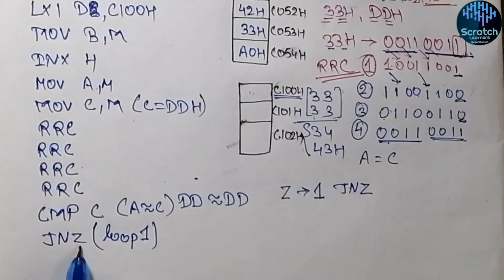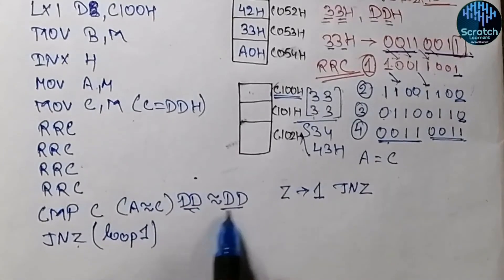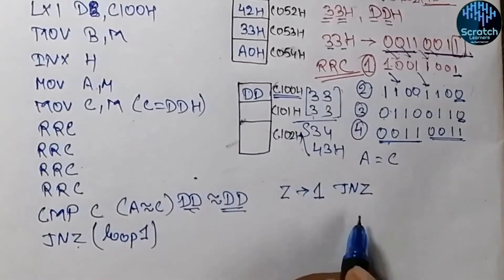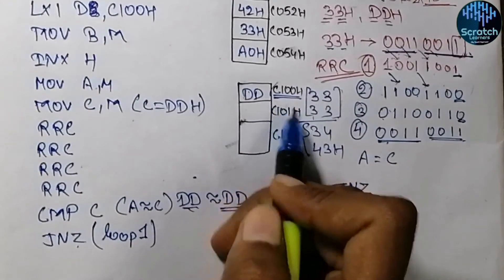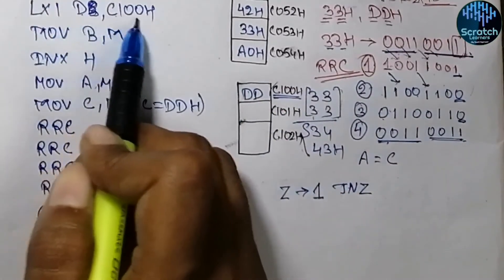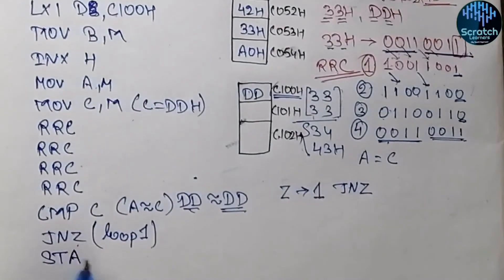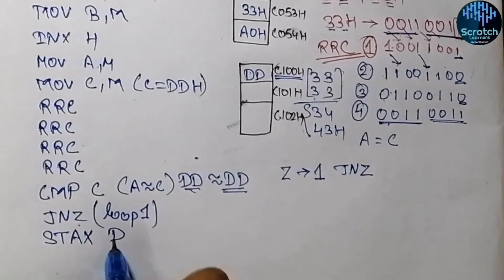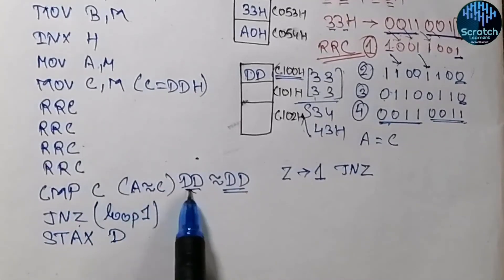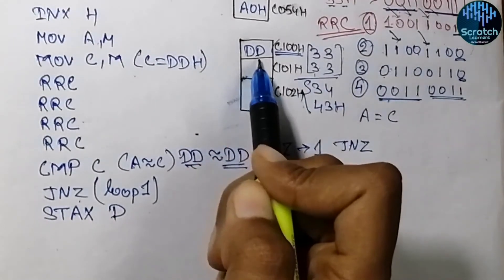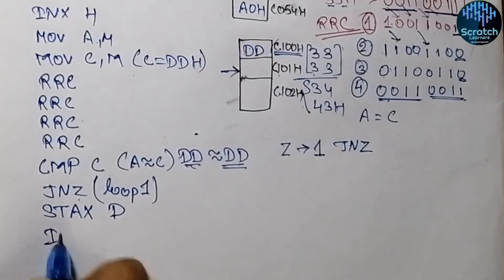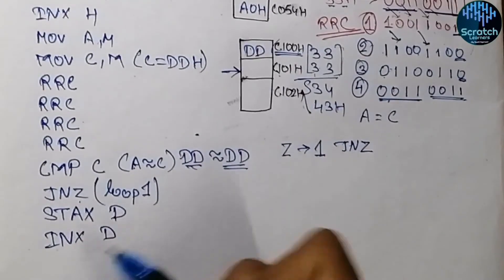If the zero flag is generated, it means both nibbles are equal, so we need to store this data. We use STAX D, which stores the content of the accumulator into the memory location pointed to by the DE register pair — initially C100 hex. After storing, we increment DE with INX D to point to the next output address.